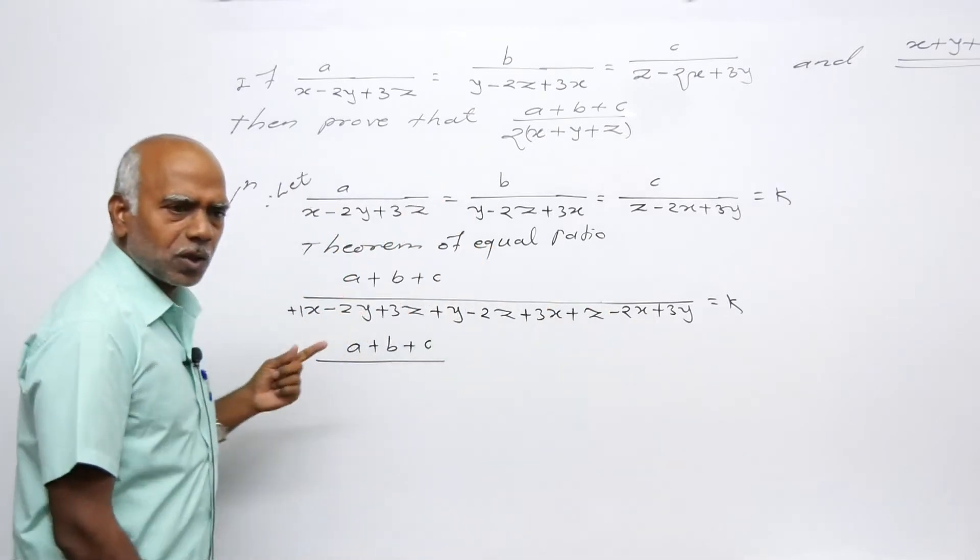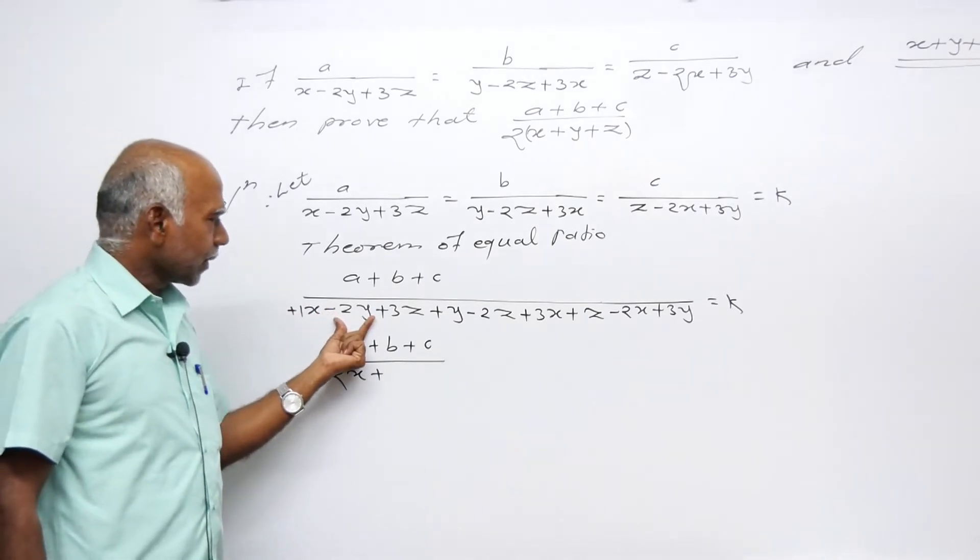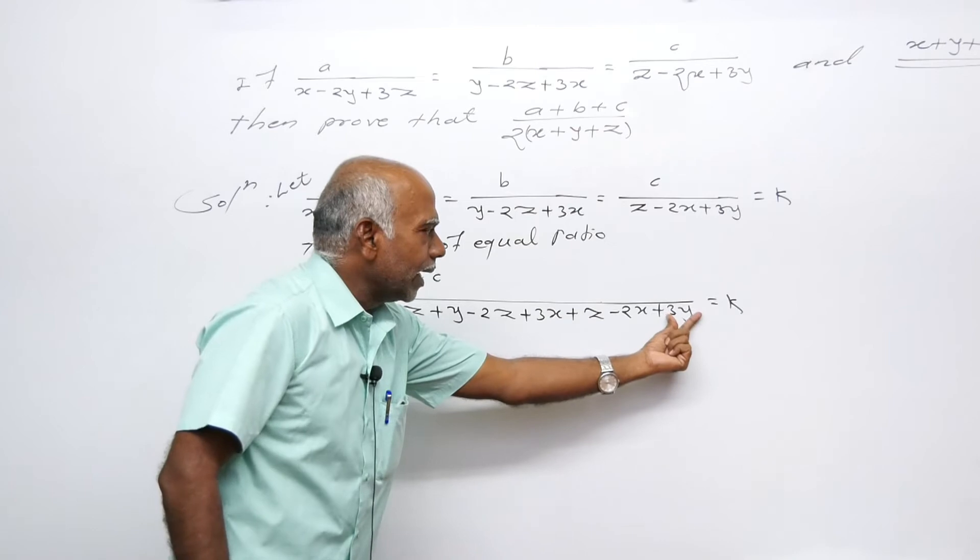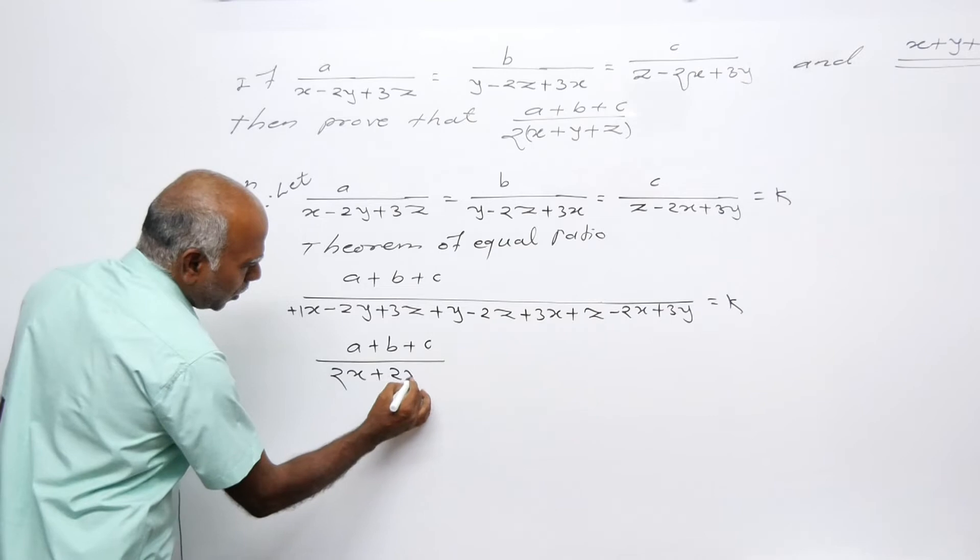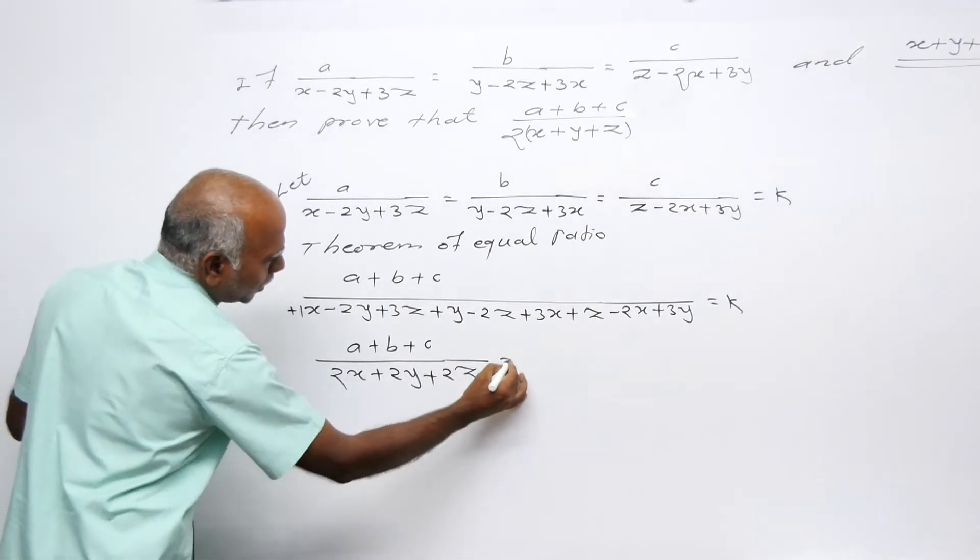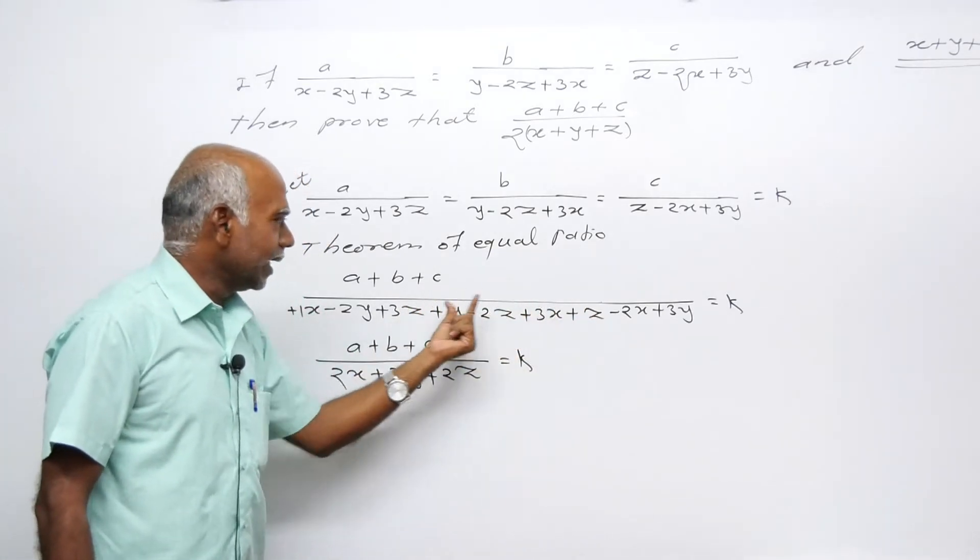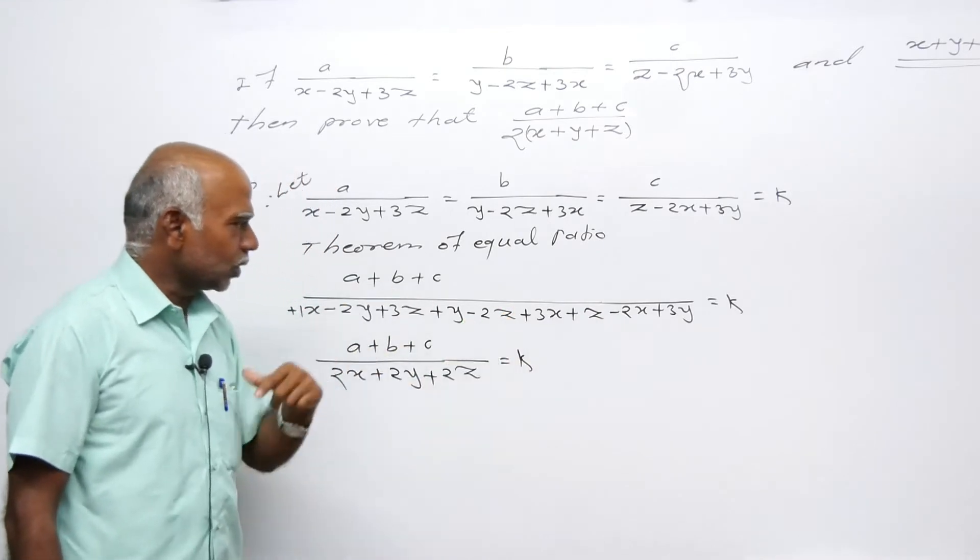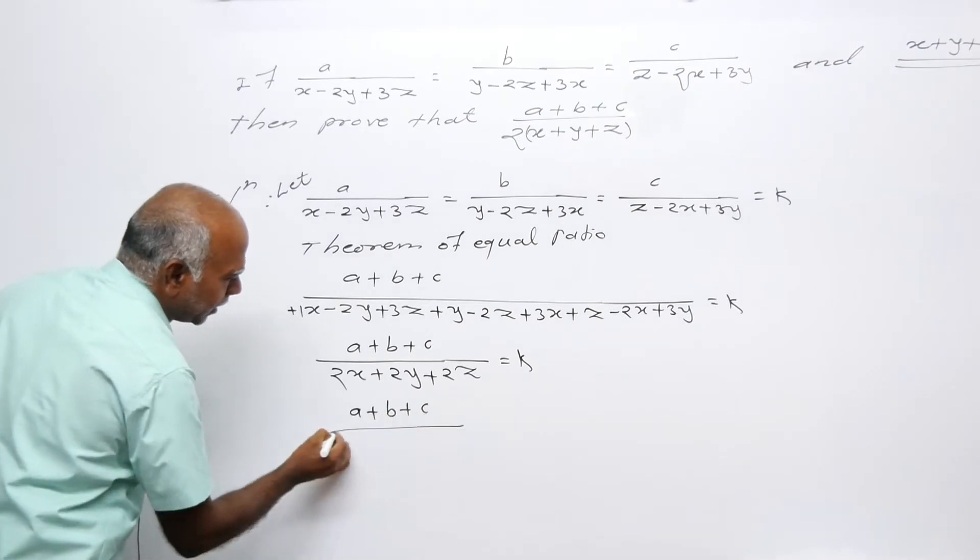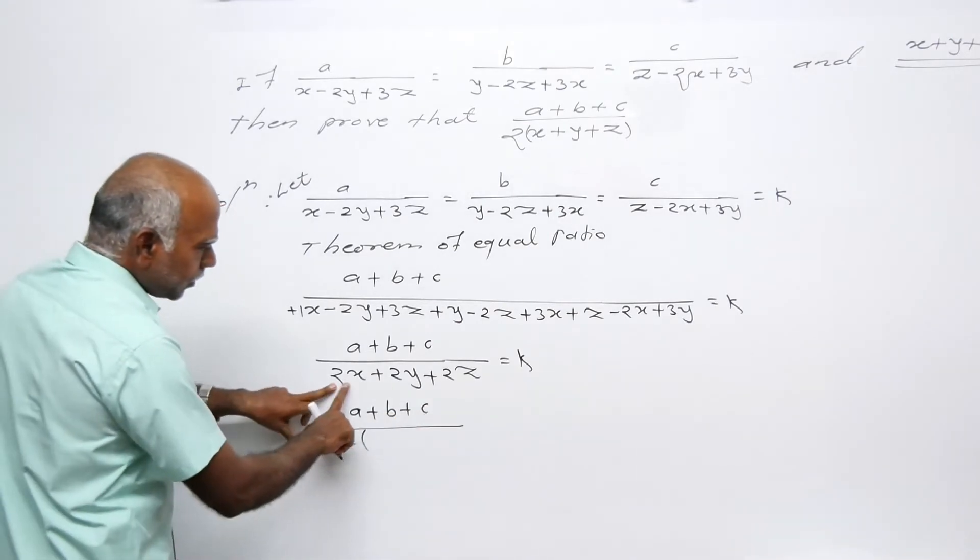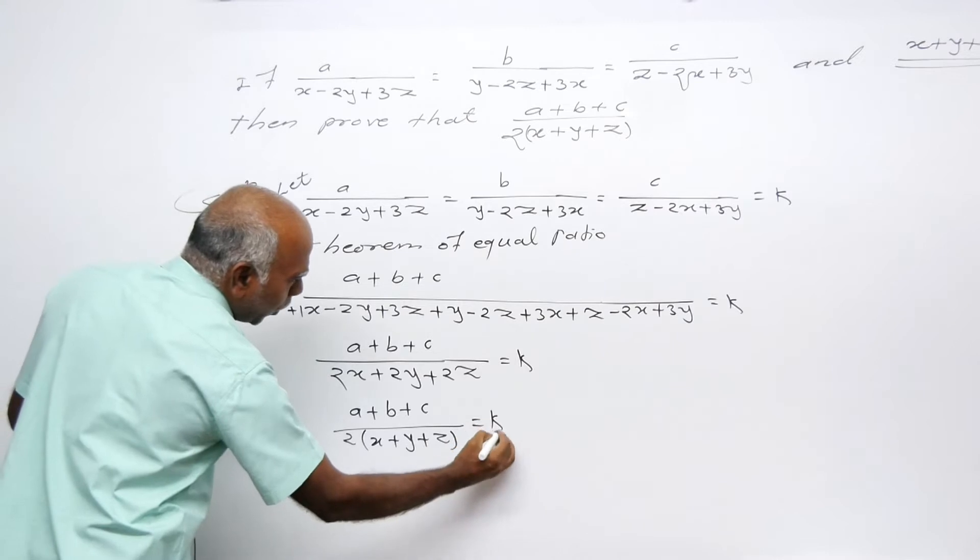Let's calculate: x plus y, then y minus y cancels, 3y plus y gives 4y, 4y minus 2y gives 2y plus 2z, and 3 plus 1 gives 4, so 4 minus 2 equals 2.